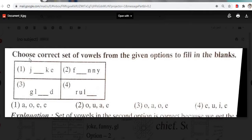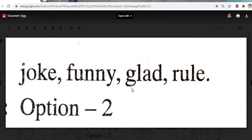Next question. Choose correct set of vowels from the given option to fill in the blanks. First, J-K-E. J-O-K-E. Joke. Then F-U-N-N-Y. Funny. Then G-L-A-D. Glad. Then next one is R-U-L-E. That means option number second. Second is the right answer.